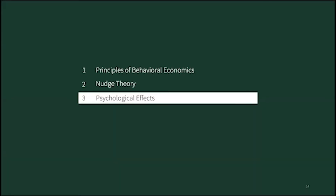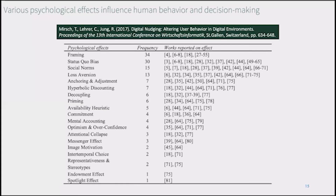Let's look at the psychological effects that shape our behaviors and can serve as a basis for nudges. The academic literature on psychological effects is extensive. Narrowing it down to those effects used or suggested with respect to nudging gives us a selection of 20 effects. In this video, I will focus on the five most prominent psychological effects used in nudging.